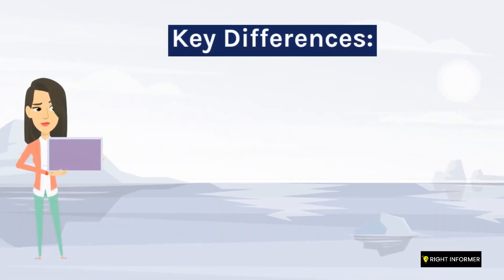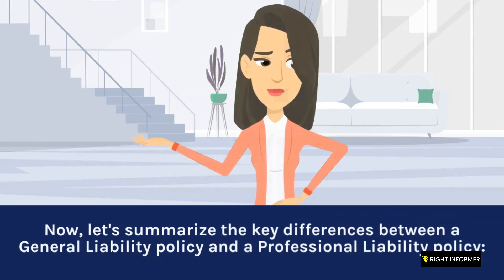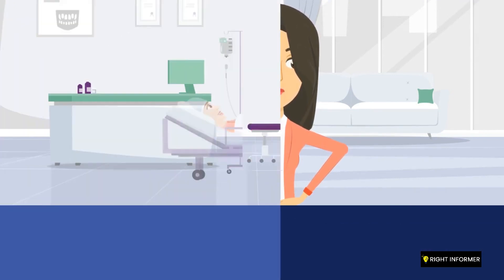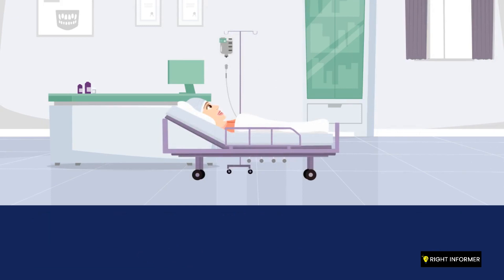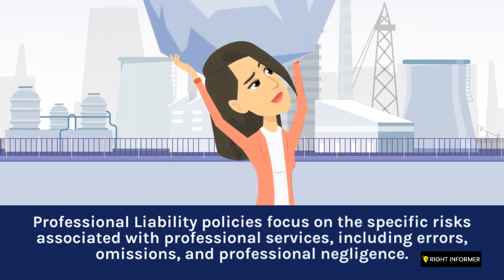Now let's summarize the key differences between a general liability policy and a professional liability policy. In terms of coverage focus, general liability policies cover general risks and incidents related to bodily injury, property damage, and personal injury. Professional liability policies focus on the specific risks associated with professional services, including errors, omissions, and professional negligence.